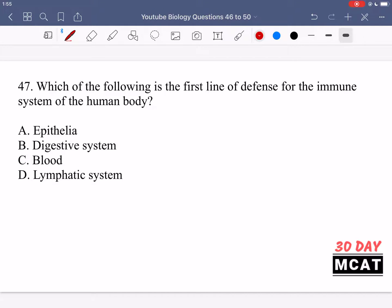In question 47, we're asked, which of the following is the first line of defense for the immune system of the human body? So the immune system, the part of the body which is responsible for protecting us against pathogens and foreign invasions. What is the first line of defense?